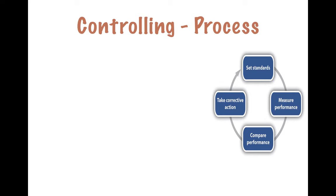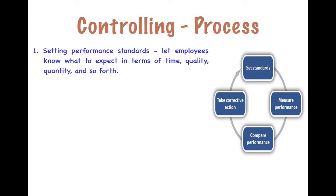Now let's look at the process of controlling. It's a circular process wherein we first set standards, then measure performance, compare the performance, and then take corrective action. But it does not end at corrective action — it again moves on to setting of standards. The first step is letting employees know what to expect in terms of time, quality and quantity. That is what setting standards means.